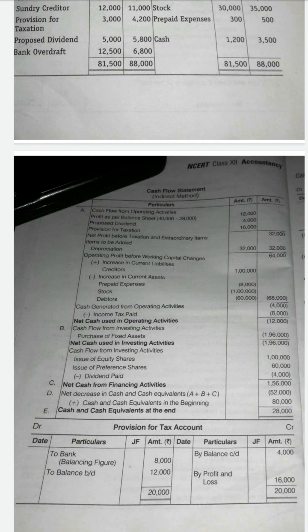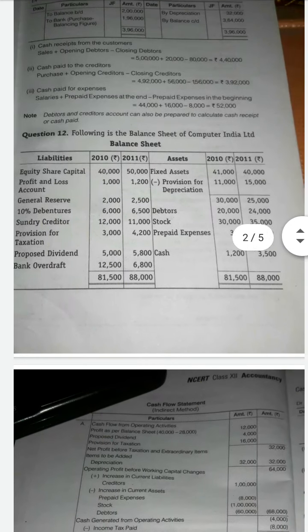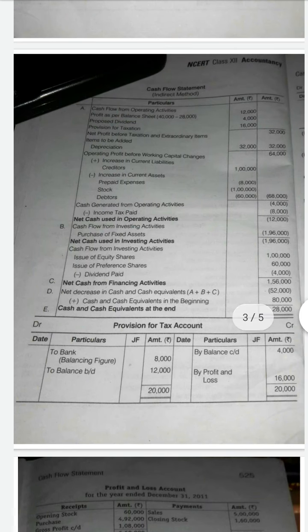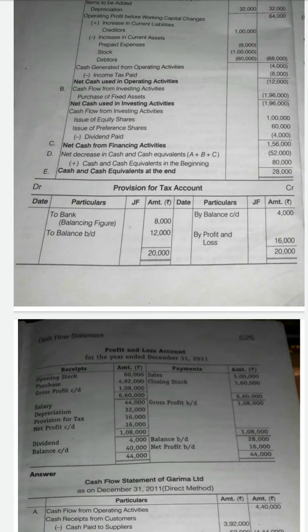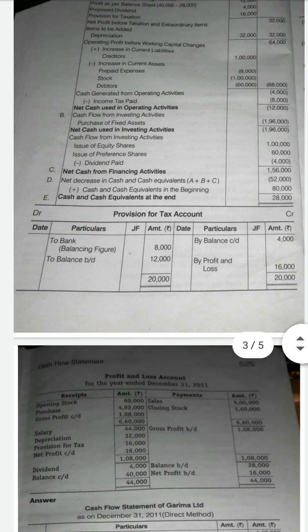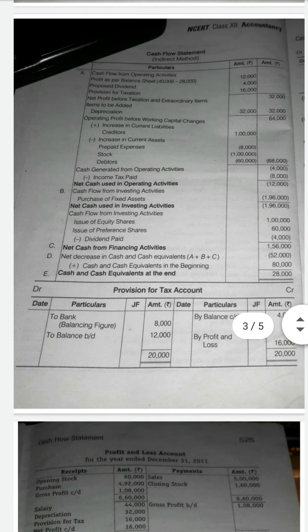Next, as per the format, we check if there is any proposed dividend. Looking at the profit and loss account, there is a dividend of 4,000, so proposed dividend is 4,000. We also check for provision for taxation for the current year — the current year provision is 16,000. After adding these, the total net profit before tax and extraordinary items is 32,000.